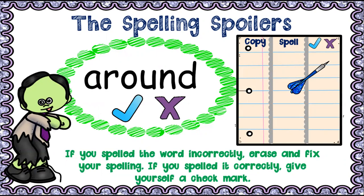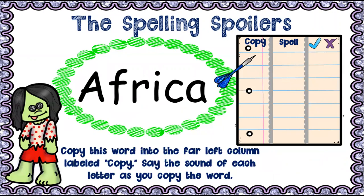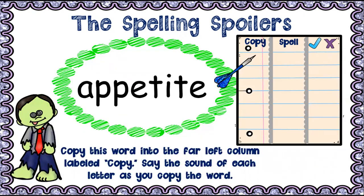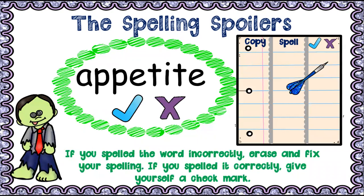Number four — 'Africa.' Check your answer, mark 'yes' if correct and 'no' if incorrect, and copy it correctly. Number five — 'appetite.' Appetite. You hear that 'uh' in there but it's not a 'u' — appetite. Check your answer. If you got it correct, mark 'yes'; if not, mark 'no' and copy it down correctly.